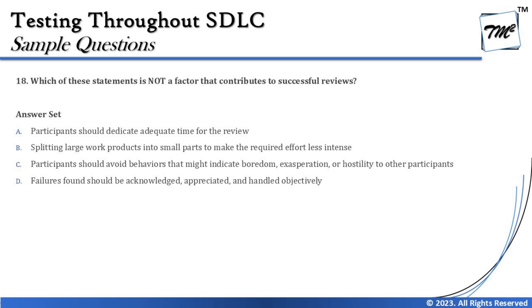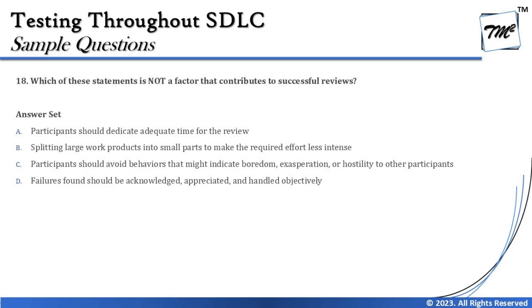Option B: splitting large work products into small parts to make the required effort less intense. We do not try to take a bigger chunk of work at a time. From Agile principles too, we break an epic into multiple smaller stories — as small as one person can handle. We always try to simplify our work for better handling, so this is again one of the success factors.